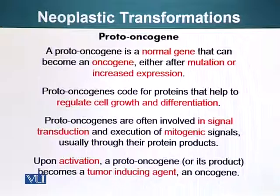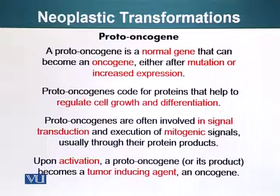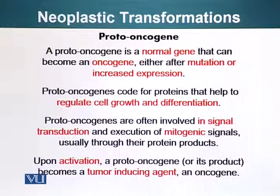However, if there is a change in one of these proto-oncogenes which causes it to become an oncogene, it will result in cancer. Proto-oncogenes generally code for proteins that help regulate cell growth and differentiation. Proto-oncogenes are often involved in signal transduction and execution of mitogenic signals, usually through their protein products. Upon activation, a proto-oncogene or its product becomes a tumor-inducing agent, which is also referred to as an oncogene.